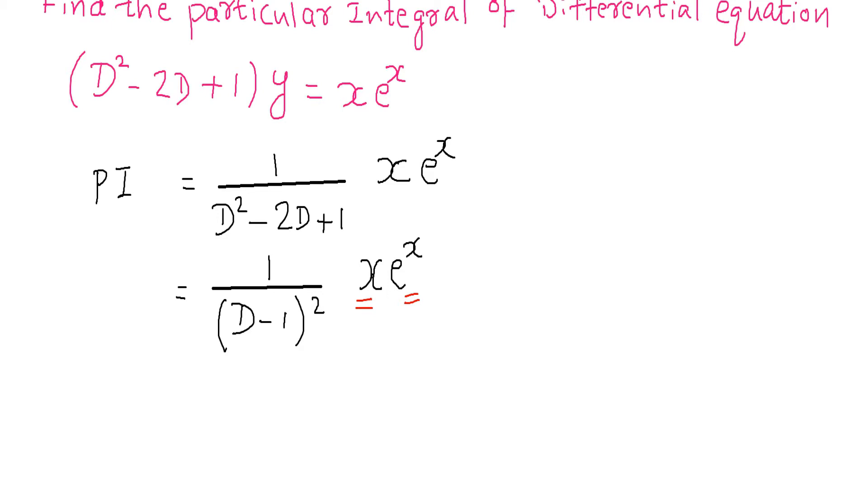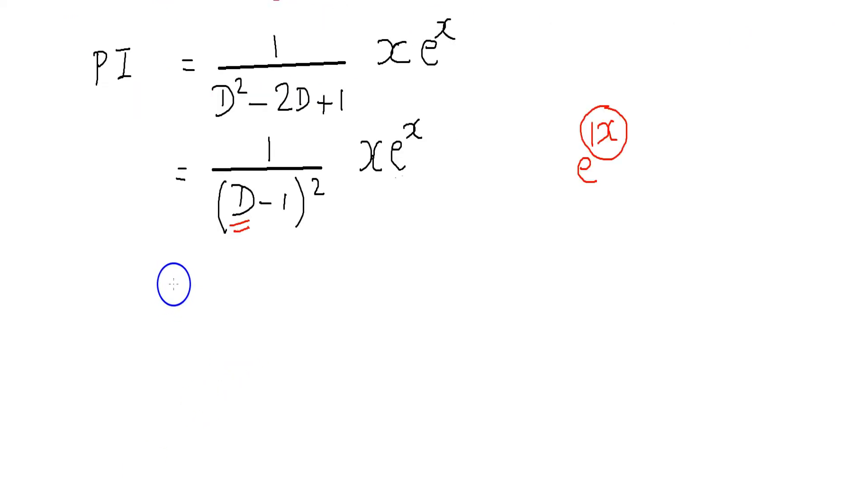To apply shifting property, we take e^x to the left of the term and add the coefficient of x in the exponential function e^x to the D terms in the denominator. Here the coefficient of x in the exponential function e^x is 1, so add 1 to D term in the denominator.